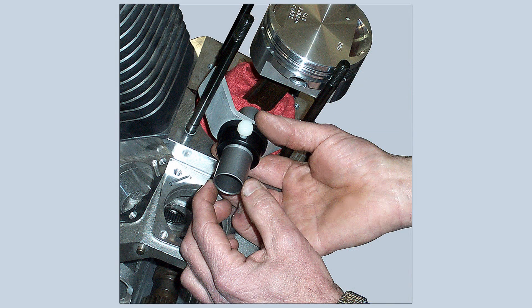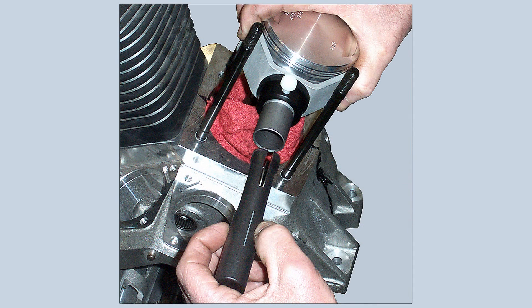To install the second clip, all you have to do is run the depth adjuster ring back to the depth stop, then slide the C-Clipper up to locate its sleeve in the wrist pin bore. And that's all there is to it.